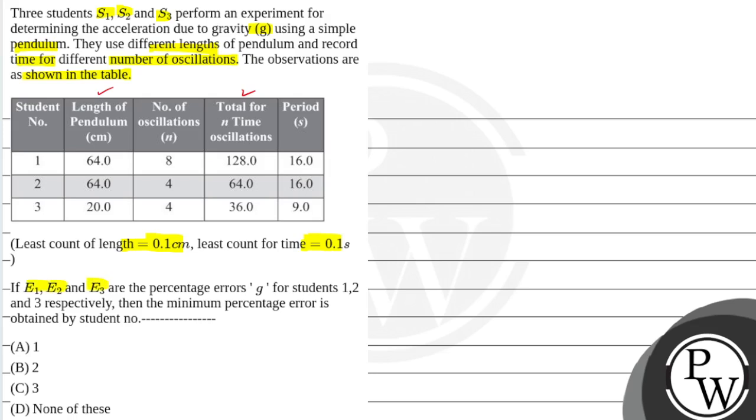If E1, E2, and E3 are the percentage errors of g for students 1, 2, and 3, then the minimum percentage error obtained by student number... We will find which student has minimum percentage error.